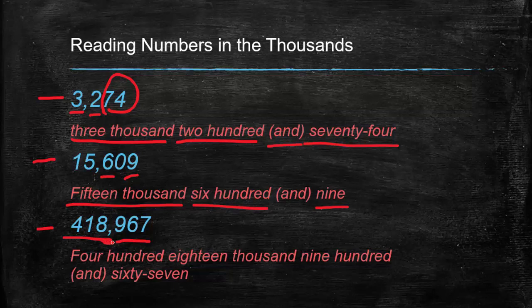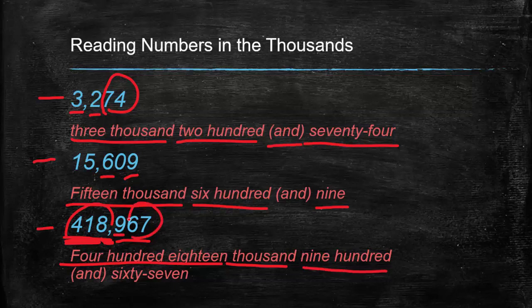This next number has six digits and one comma, so it's still in the thousands, but there are three digits before the comma. That is read as four hundred eighteen thousand nine hundred and sixty-seven.